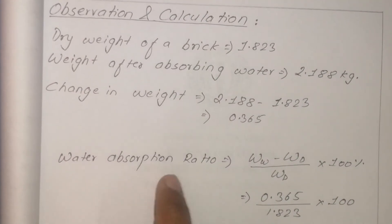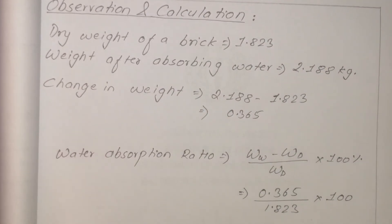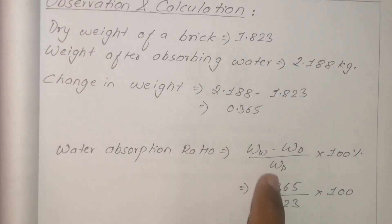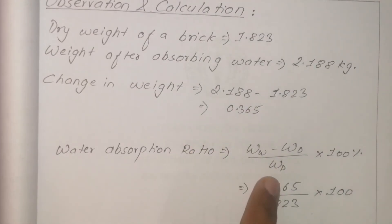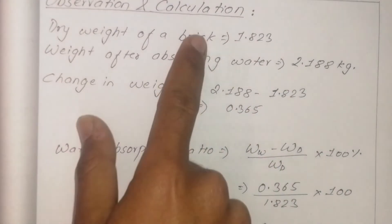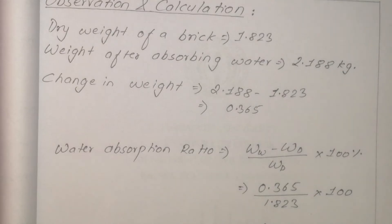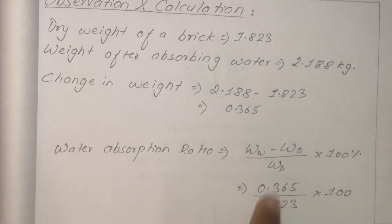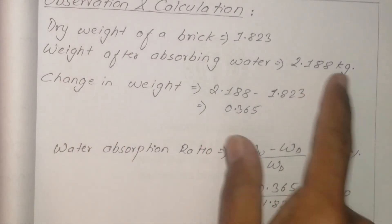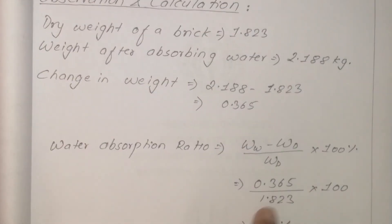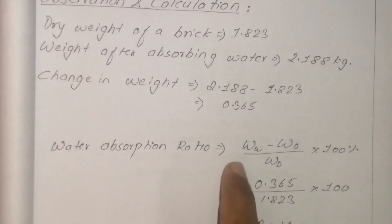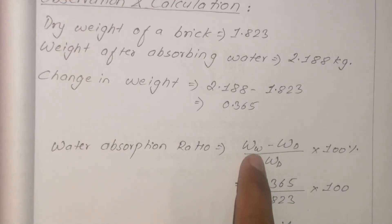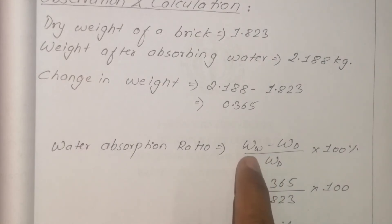The water absorption ratio is the change in weight divided by the initial weight, multiplied by 100. The initial weight is the dry brick weight (W_D). The absorbed weight (W_W) minus dry weight (W_D), divided by W_D, gives the ratio.